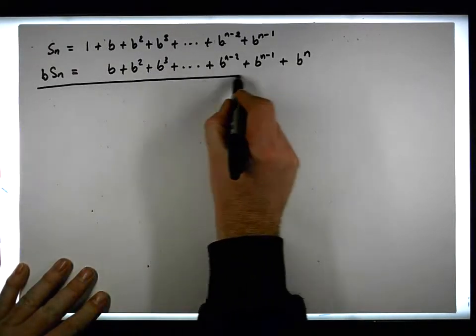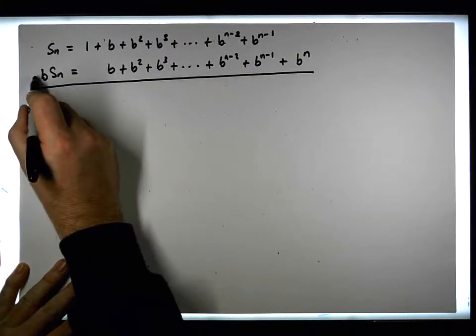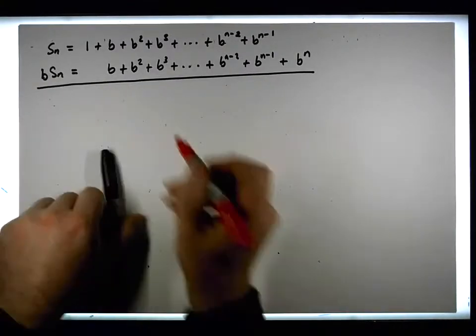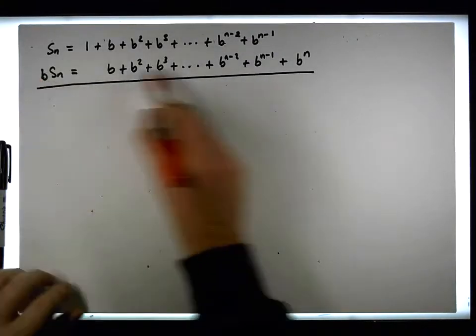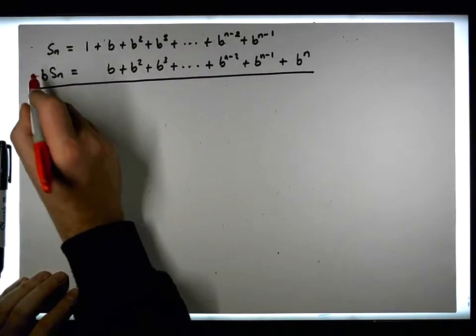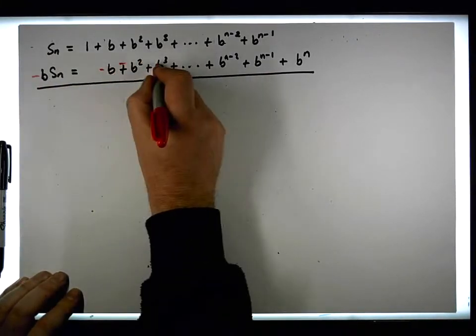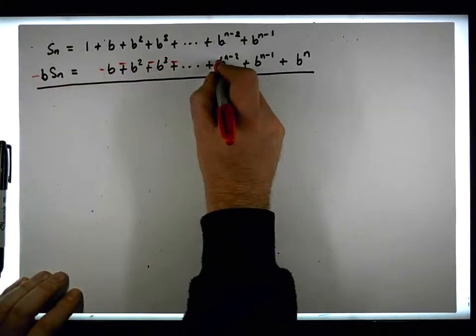So we have this relationship, and what we can do is subtract one row from the other — multiplying through by minus 1 — subtracting b times S_n from S_n.